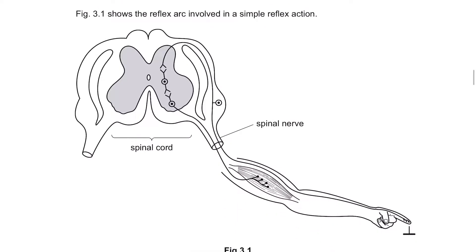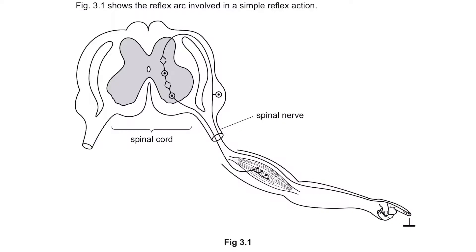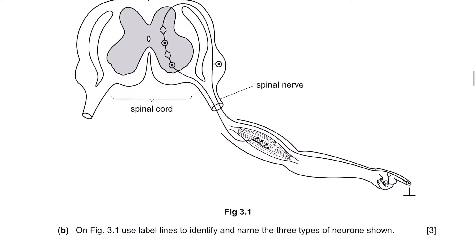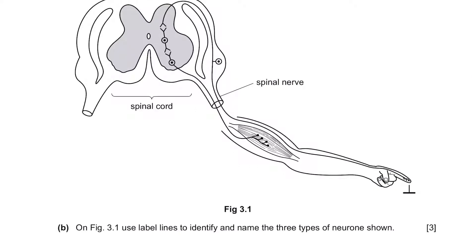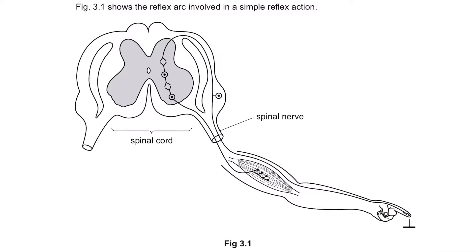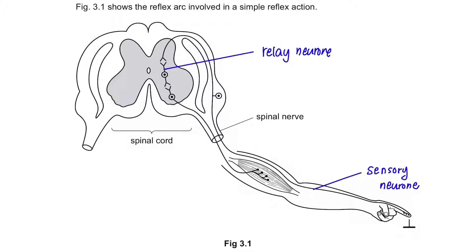Figure 3.1 shows the reflex arc involved in a simple reflex action, with a diagram of the spinal cord, spinal nerve, and a finger about to touch a nail. Part B: use label lines to identify and name the three types of neurons shown. There are three types: the sensory neuron, which senses everything; the relay neuron, which delivers the impulse; and the motor neuron, which will cause muscle contraction.